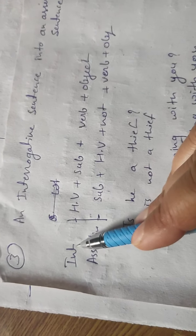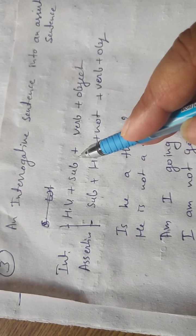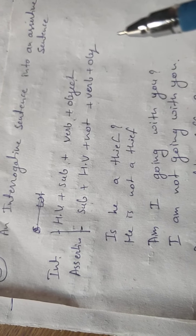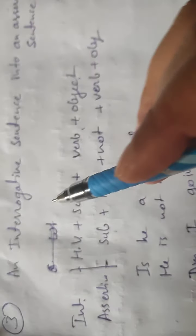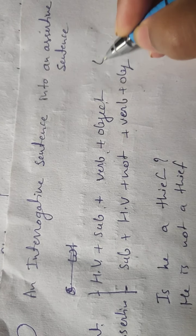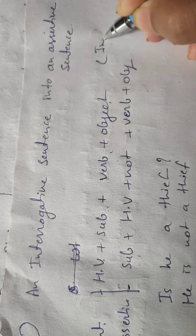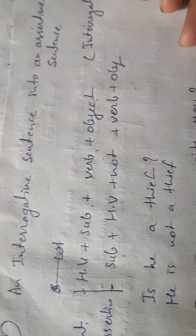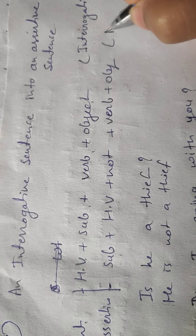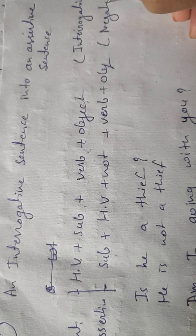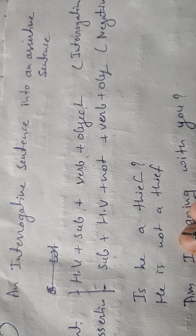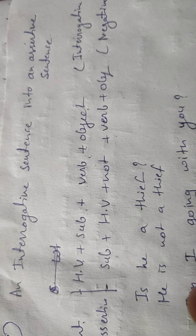So now, this is an interrogative sentence in which we have helping verb, subject, verb, and object. Simply, if the sentence is in interrogative only, then the assertive sentence will be in negative. Simply, I want to say: if 'not' is there, you have to remove it. If 'not' is not there, then you have to write it.